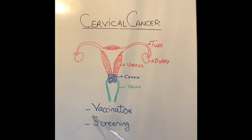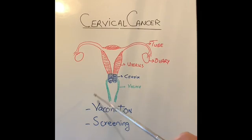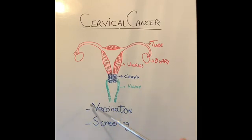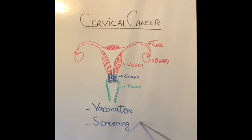If the smear is showing changes, then the cervical smear is repeated earlier than five years. In certain parts of the world these facilities are not available. If they are not available, then please try and ensure that you or your daughters get vaccination earlier on in life and get regular screening done with a pap smear or cervical smear every five years.